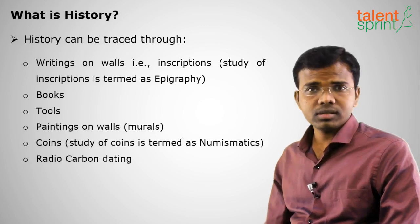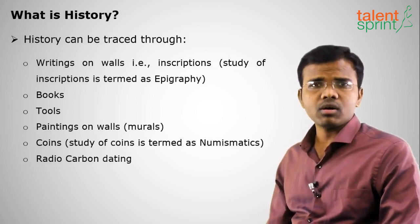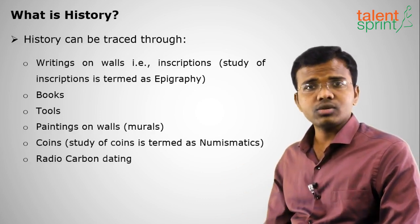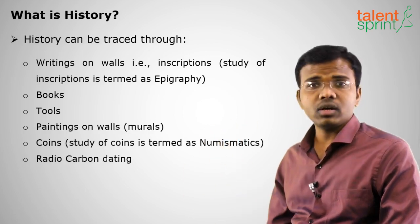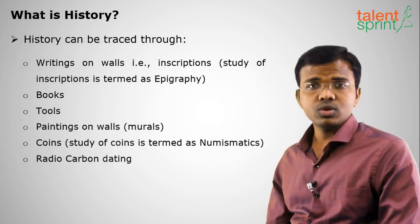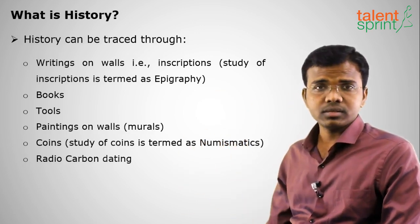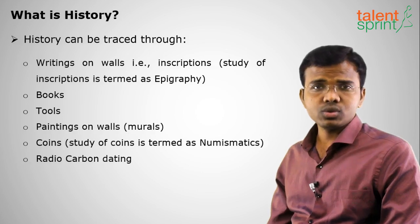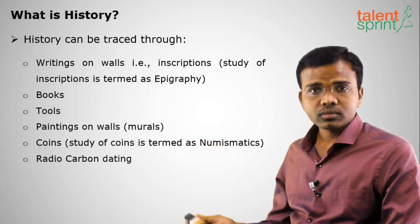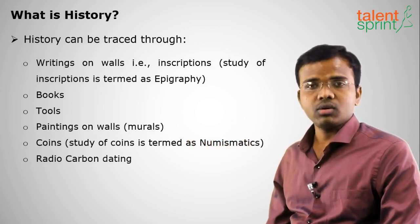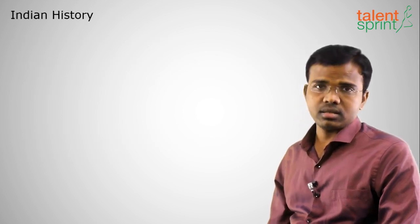The last method is radiocarbon dating. Carbon-14 (C14) is present in all living organisms, and through it we can know the age of that living organism. In this way, radiocarbon dating is very useful for knowing about history. These are the various methods which historians and archaeologists use to know the past of any country, place, or civilization.